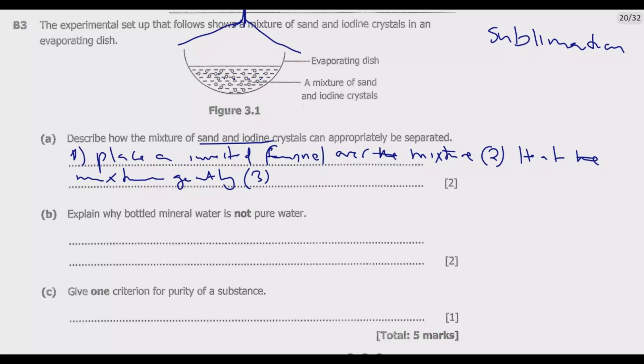That funnel should be covered with an ice pack. We cool the funnel with an ice pack placed on top. This ice pack will help the iodine gas to cool and revert back to solid state on the surface - it will deposit on top.